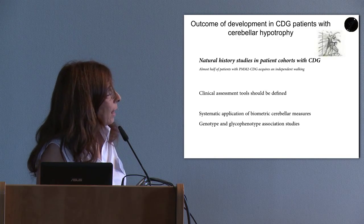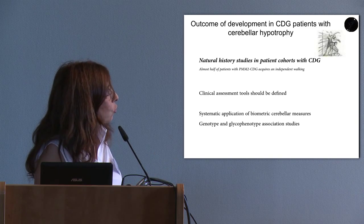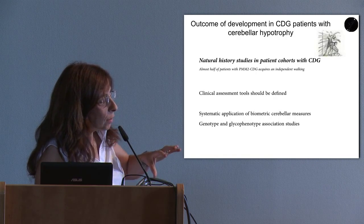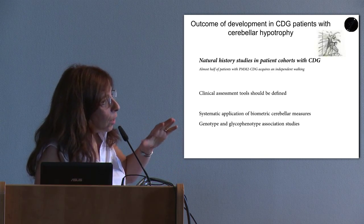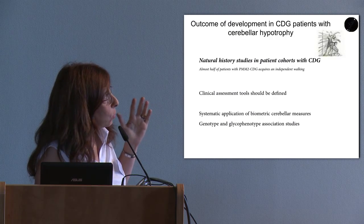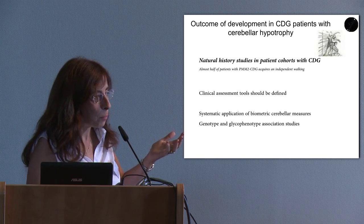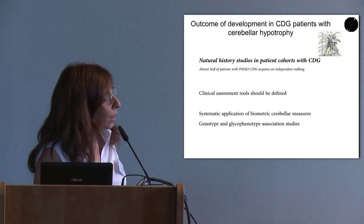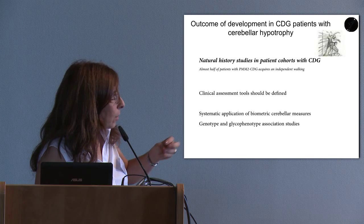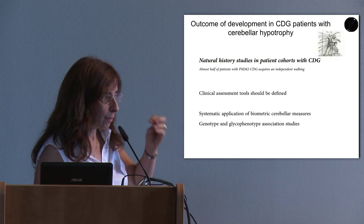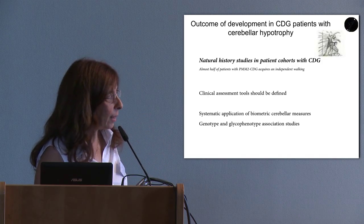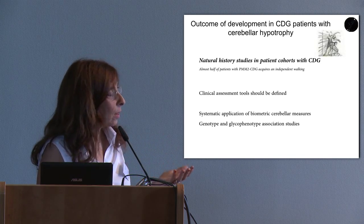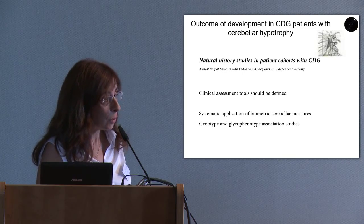To conclude, to improve our knowledge about cerebellar involvement in CDG, we need more natural history studies in patient cohorts. From studies already available, we know that fewer than half of patients with PMM2-CDG acquire independent walking — a concept that would have been difficult to imagine many years ago. We need clinical assessment tools through systematic application of both standardized scales and radiological cerebellar measurements, and we must find association studies between clinical features, genotype, and glycophenotype in these patients.